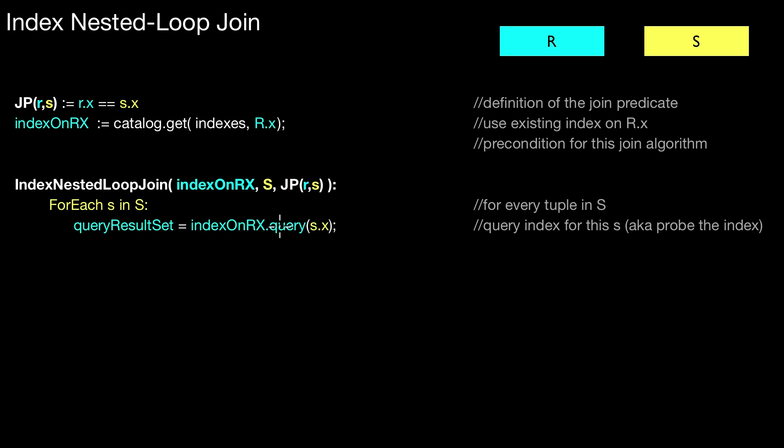Notice that I do not pass relation R here as a parameter. I just pass this handle to the index. Then relation S again and the join predicate. And then there's only one loop. That is the loop over S. And what I do is, for every tuple of S, I run a query against that index.